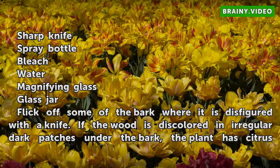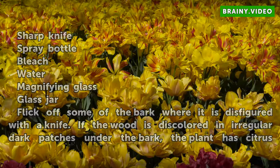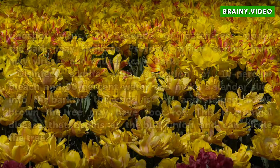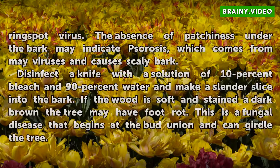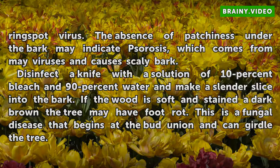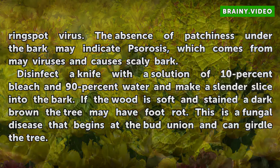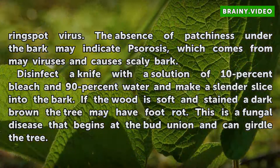Flick off some of the bark where it is disfigured with a knife. If the wood is discolored in irregular dark patches under the bark, the plant has citrus ring spot virus. The absence of patchiness under the bark may indicate exocortis, which comes from mite viruses and causes scaly bark.